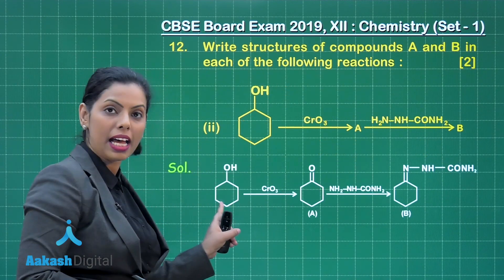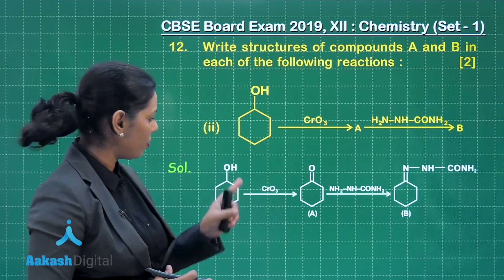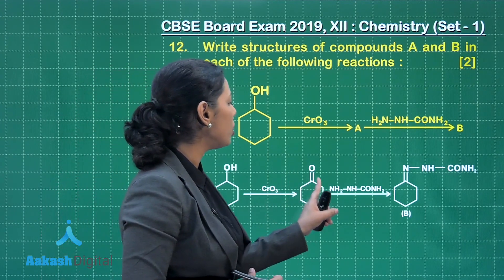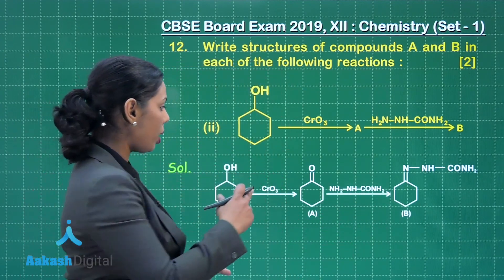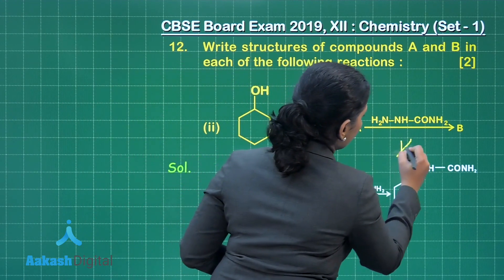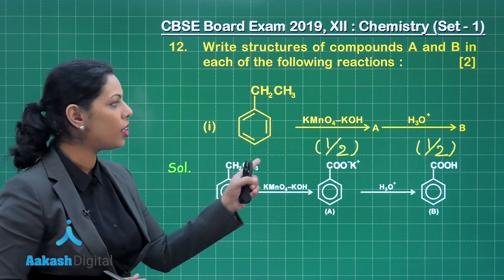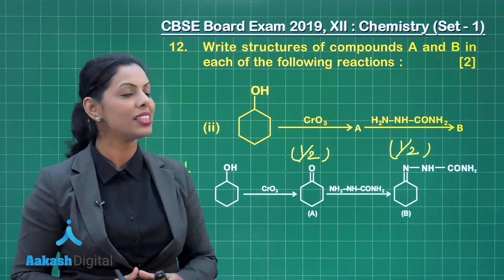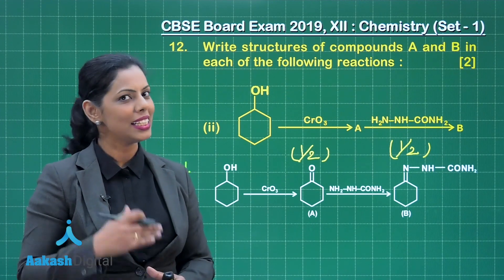For the second part, a cyclic alcohol is treated with chromic oxide. When treated with CrO₃, you obtain the corresponding ketone as product A. When this ketone is further treated with semicarbazide, you get the semicarbazone as product B. Half mark for structure of A and half mark for structure of B, giving 1 mark for this part. Total 2 marks for question 12. Now let us move towards section C.